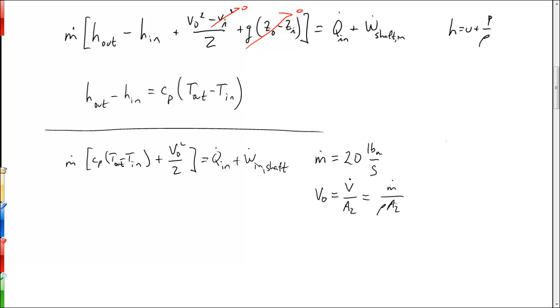And then using the ideal gas law, where P equals rho RT, we can substitute and get the mass flow rate over the area at the outlet times R times the temperature at the outlet, divided by the pressure at the outlet.